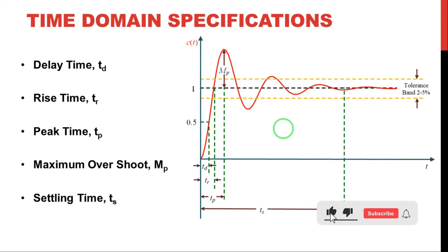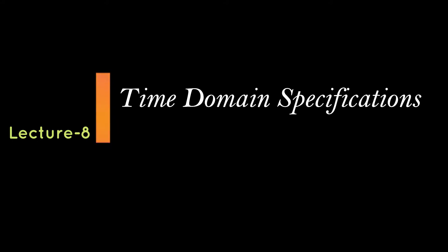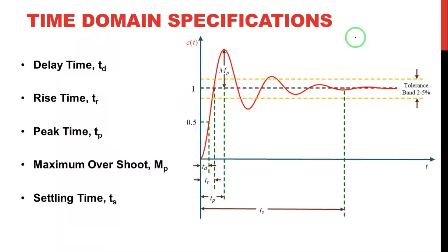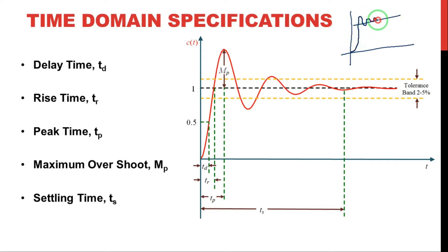In this lecture we will discuss about the time domain specifications. First of all, what do you mean by time domain specifications and why do we need to analyze them? We already discussed the response of first order system and second order system. Taking the underdamped system time response, the output response will have two regions: transient region and steady state region.